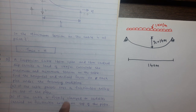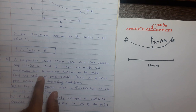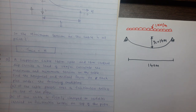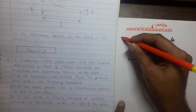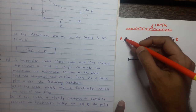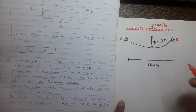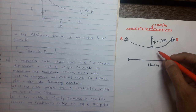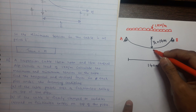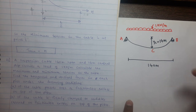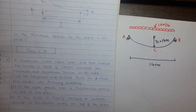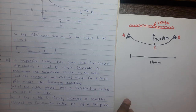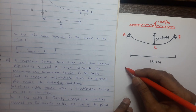We have to find the maximum and minimum tension in the cable. For a symmetric cable, the maximum tension will be at the ends, and the minimum tension will be at the lowest point of the cable, that is at point C.